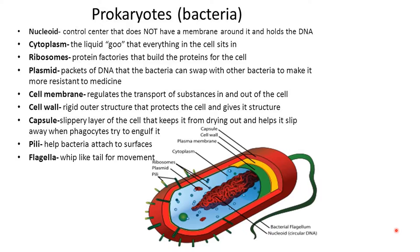Ribosomes are what construct proteins. The nucleoid isn't the only source of genetic material — we also have plasmids, which are small circles of genetic material. They can be replicated separately from the chromosome, and it's a way bacteria can change their traits and adapt. They can be moved around and swapped with other bacteria.